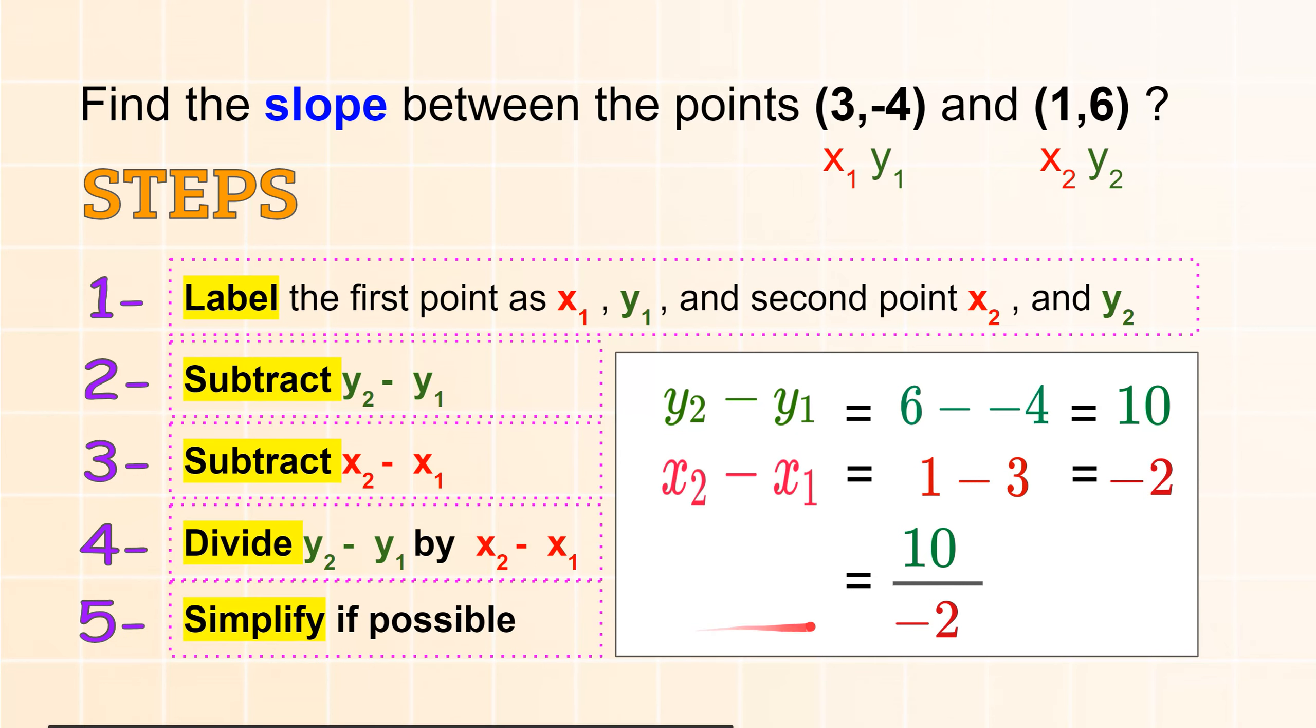And that will give me step 5. Simplify if possible. Usually you can divide or simplify the fraction to get a simplified fraction as an answer. In this case the negative would stay up. So the answer is negative 5. And this is the slope of the line between those two points.